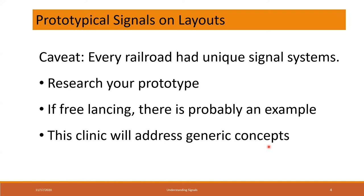This clinic's going to address generic concepts. So if you're really into the Bangor and Aroostook, and you say the second sub didn't do it this way - they tapped out the indications in Morse code - I'll say that's great that you're really into the historical aspects and the accuracy, but I really don't care. The thing to do is to look for the indications more than the aspects as we get into it. You'll see there's a lot of commonality in the railroads if you focus on indications.